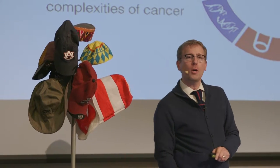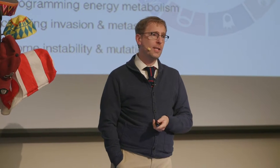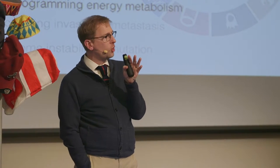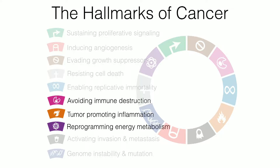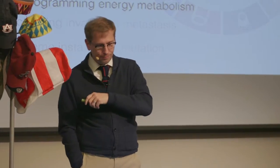We've been talking through the hallmarks of cancer — ten key commonalities for most forms of cancer that work together to move a cell from normal into cancerous. We have our Jenga tower of the specific ten hallmarks. We've gone through five of them so far. Tonight we're going to cover three: avoiding immune destruction, the role of inflammation as a driver of cancer, and reprogramming energy metabolism.